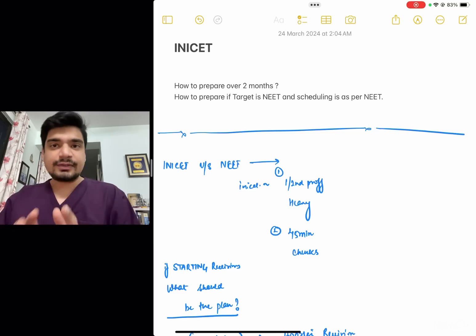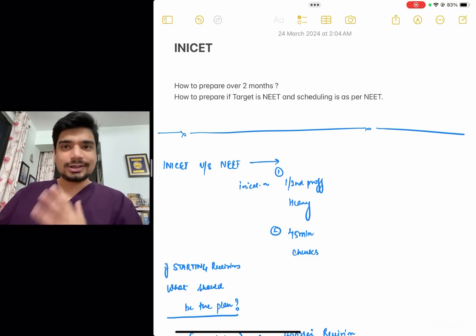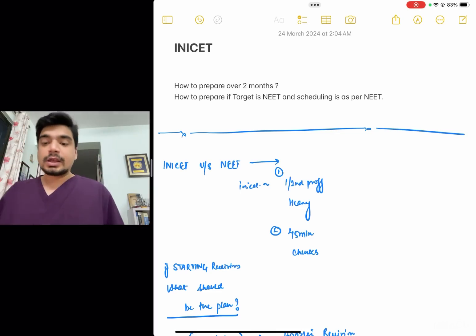But as far as INI is concerned, 60% of your questions are going to be your first and second prof, which obviously, when I say first and second prof, I mean forensic medicine also. So until your path pharma, physiology, micro, all these subjects are not strong,